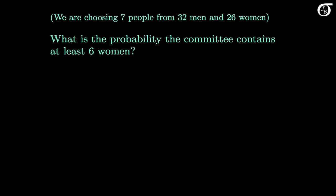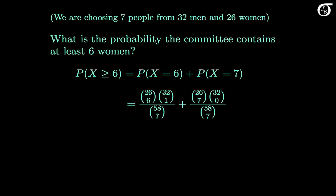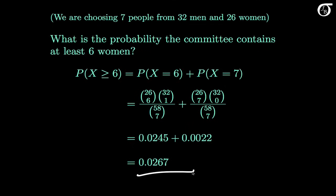What is the probability the committee contains at least 6 women? We want the probability x is greater than or equal to 6, which equals the probability x equals 6 plus the probability x equals 7, each calculated using the hypergeometric PMF. We already found the probability x equals 6. For x equals 7, the denominator is again 58 choose 7, but now we pick 7 women from 26 and 0 men from 32. The final answer rounds to 0.0267.